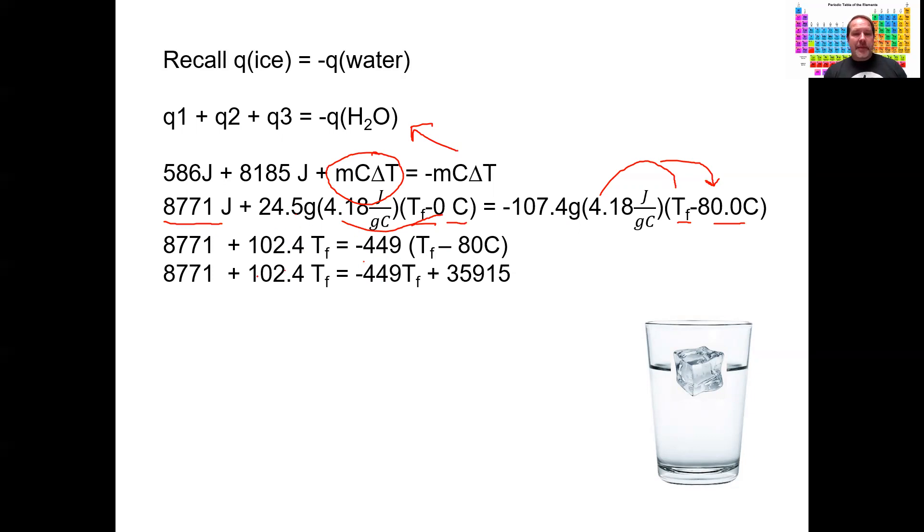But I find my variable here - T_f on the left side is 102.4. Distribute the negative 449 to the T and then to the 80. I have some variables and I have some values. I'm going to put all the T_f's to the left side and then put all the values to the other side.